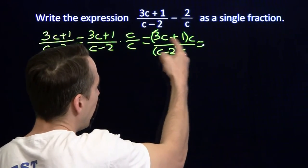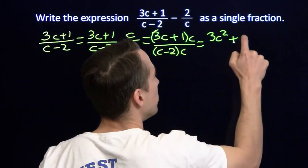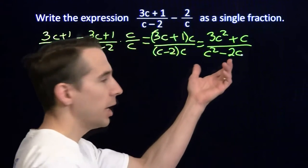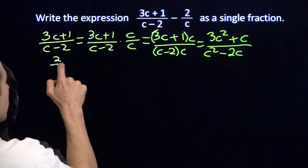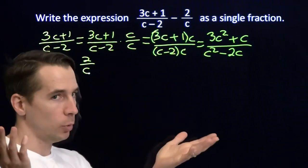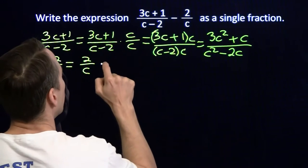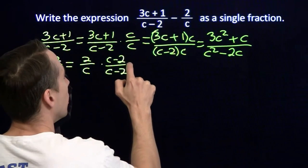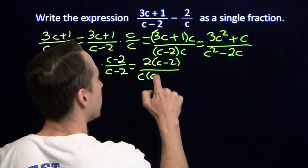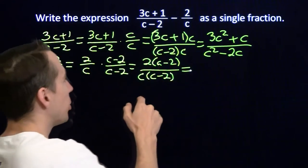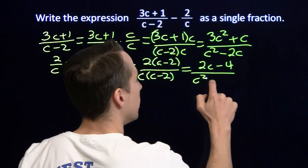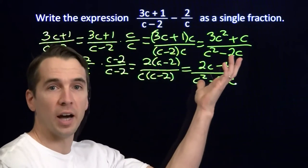We can use the distributive property to multiply these out. c times 3c gives 3c², and 1 times c is just c. In the denominator, c times c is c², and minus 2 times c is minus 2c. Now we do the same for the other fraction. Starting with 2 over c, we get the common denominator c times (c − 2) by again strategically multiplying by 1. In the numerator we'll have 2 times (c − 2), and in the denominator c times (c − 2). Distributing: 2 times c is 2c, and 2 times 2 is 4. Down here, c times c is c², and c times minus 2 is minus 2c. Sure enough, we've got our common denominator.